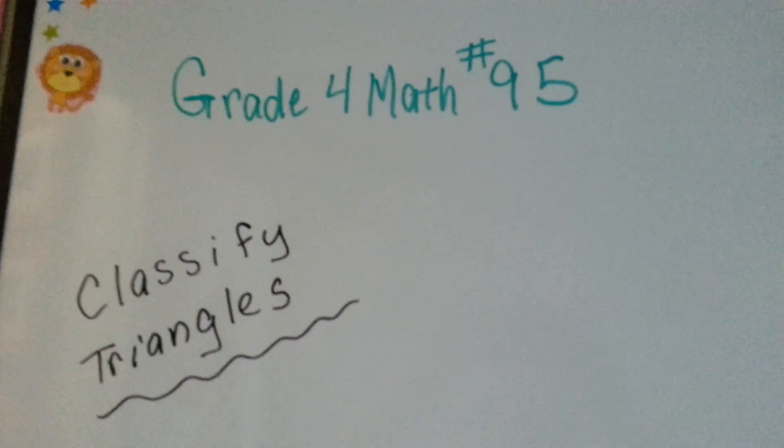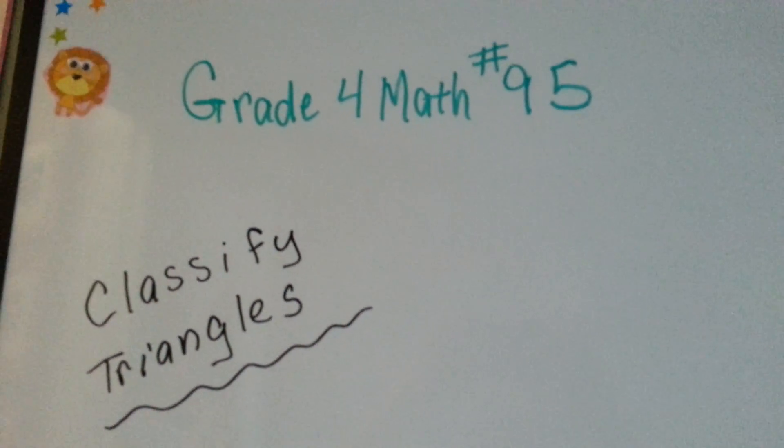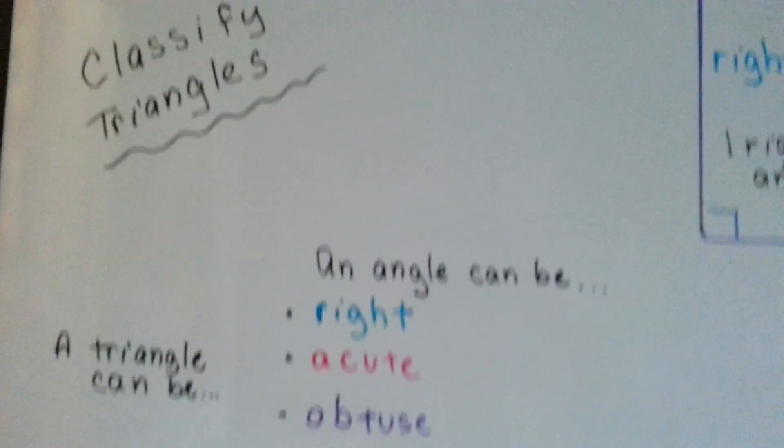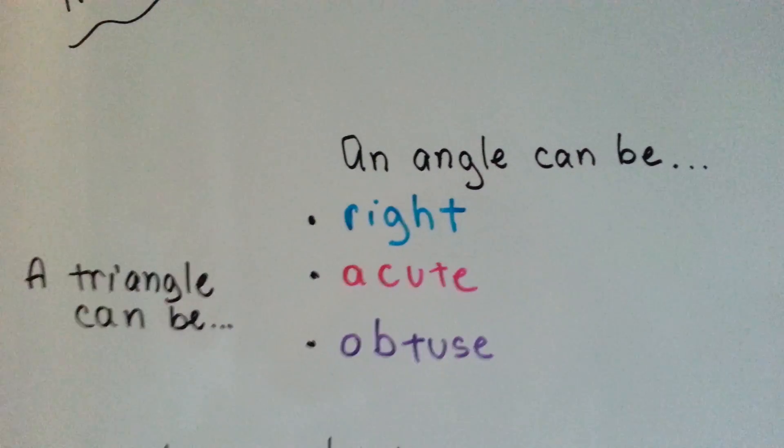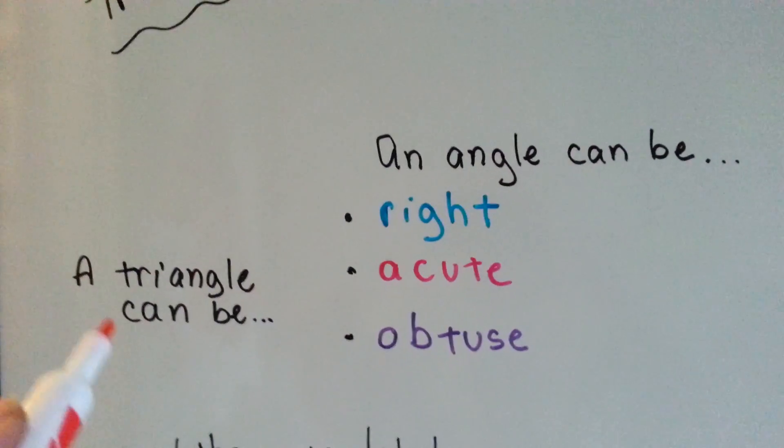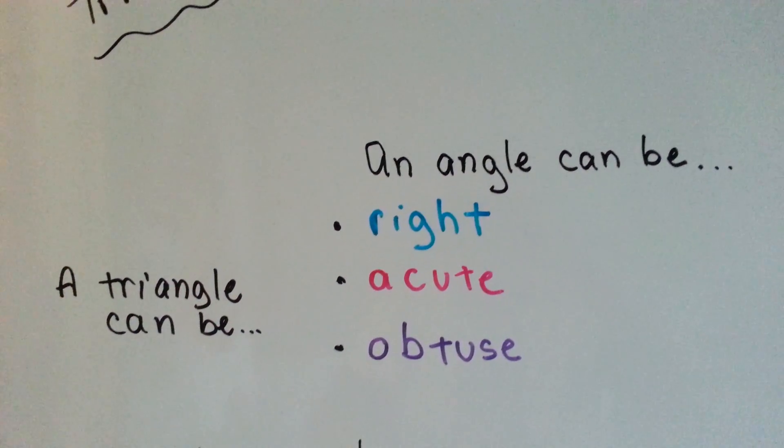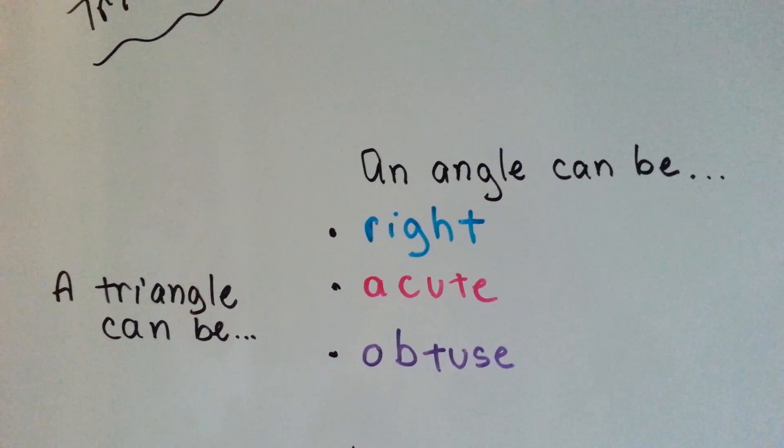Grade 4 math number 95, Classified Triangles. An angle can be a right angle, an acute angle, or an obtuse angle, and a triangle can be a right triangle, acute triangle, or obtuse triangle.